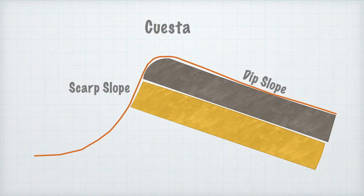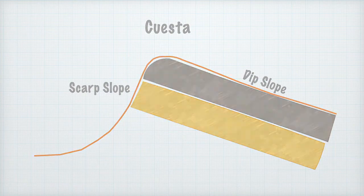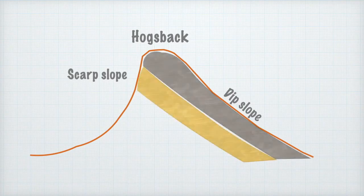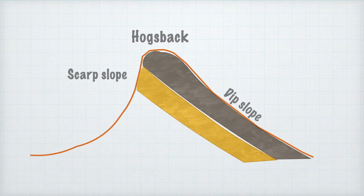Another feature associated with dipping strata would be similar to the cuesta, but it has a steeper dipping slope — that kind of feature is called a hogsback. So the difference between a cuesta and a hogsback is that a cuesta has a gentle dipping slope whereas a hogsback has a steeper slope.